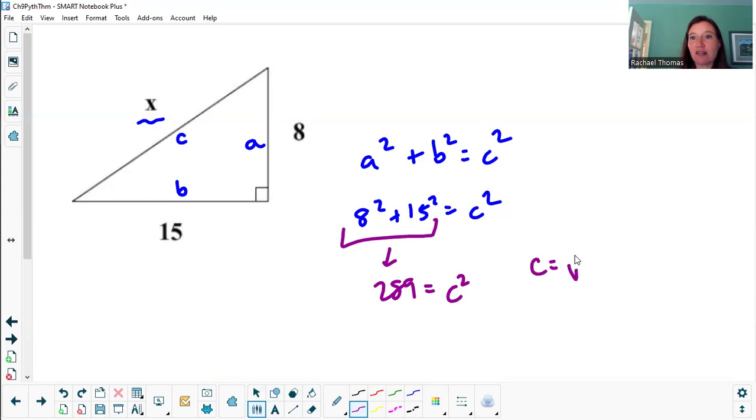All I have to do to get my answer of c is take the square root, basically unsquare 289 on your calculator. That might be a standalone button or you might have to hit the second or the shift button and then the squared button, and that gives me 17. x is 17.